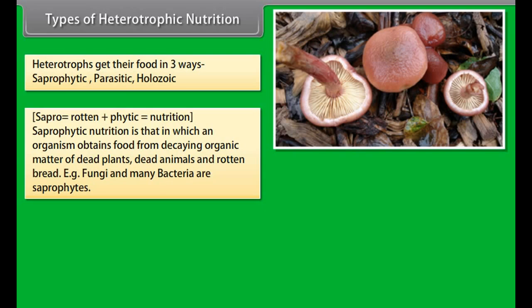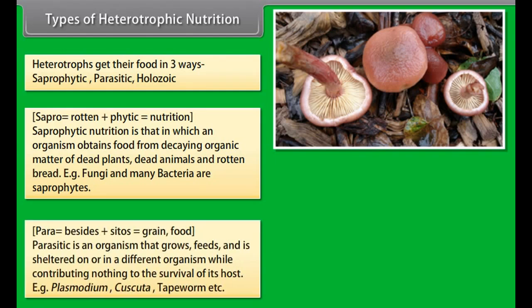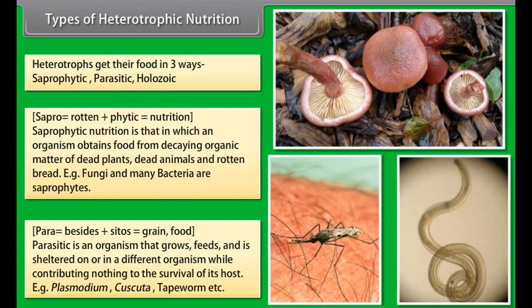Types of heterotrophic nutrition. Heterotrophs get their food in three ways: saprophytic, parasitic, and holozoic. Sapro means rotten and phytic means nutrition. Saprophytic nutrition is that in which an organism obtains food from decaying organic matter of dead plants, dead animals and rotten bread. Fungi and many bacteria are saprophytes.